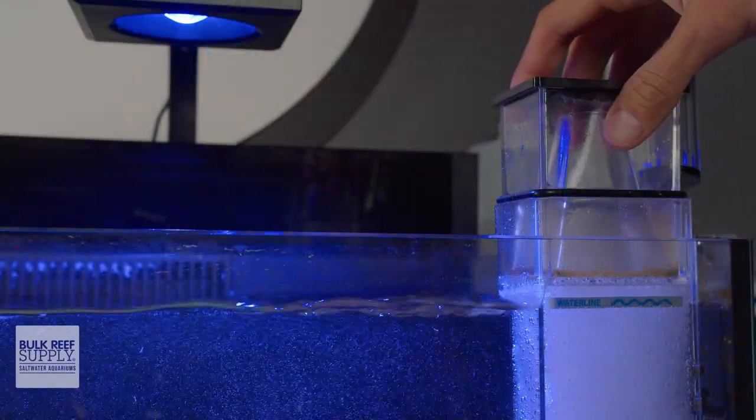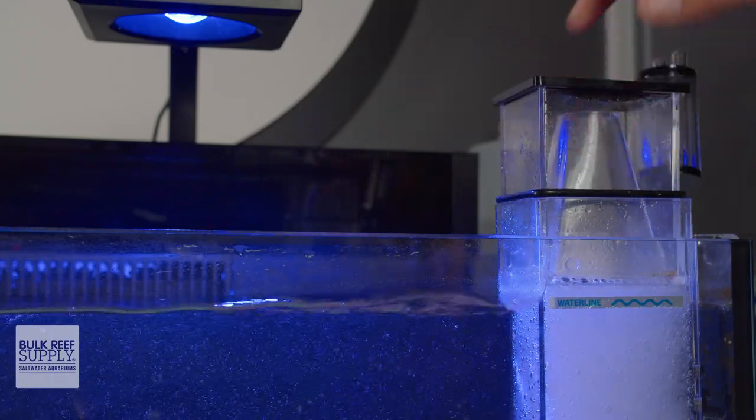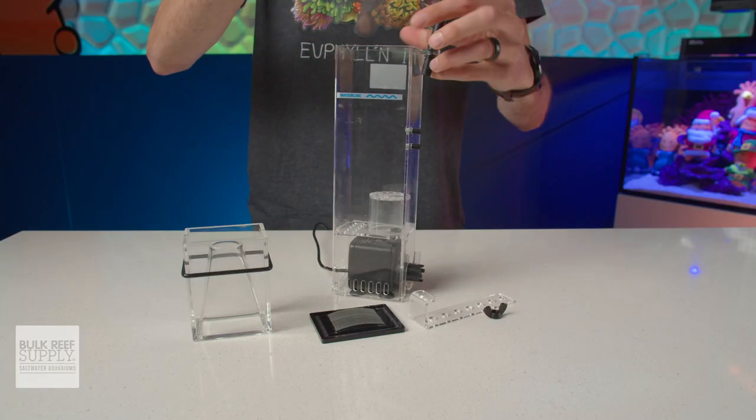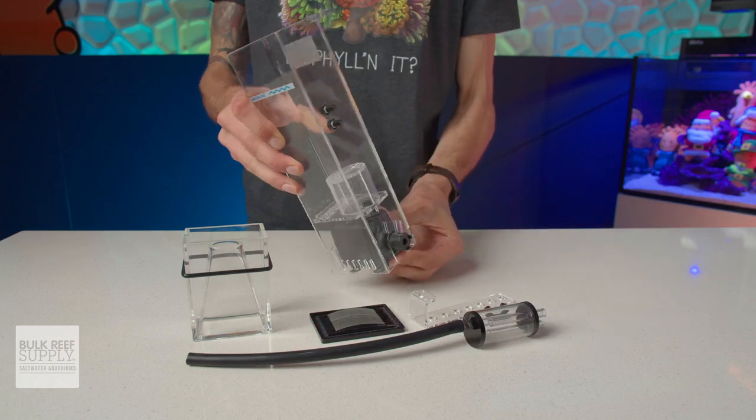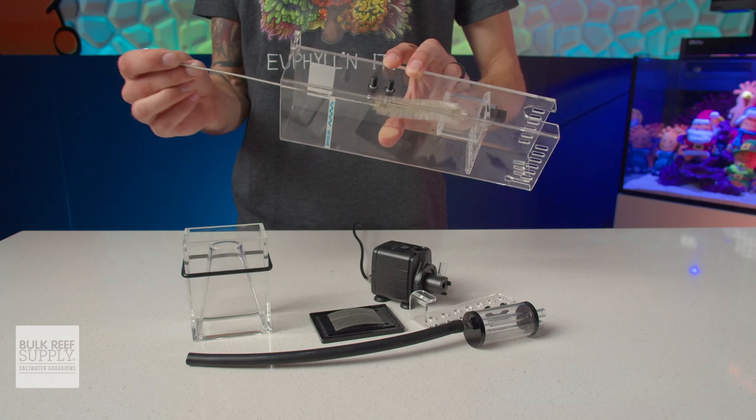Once the cup is full, it's a simple lift to remove it so you can go dump it out. And when the skimmer needs a full cleaning, it's as simple as removing the tubing from the Venturi and sliding the pump out from the bottom, giving it all a good rinse and a scrub with a foxtail brush if needed, and then putting it all back together.